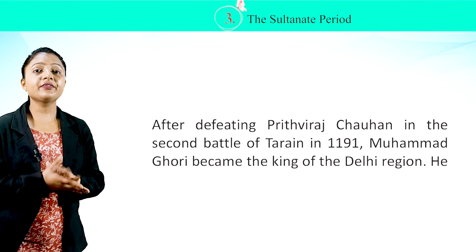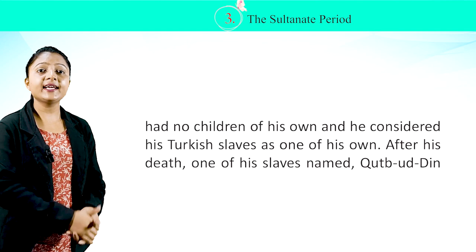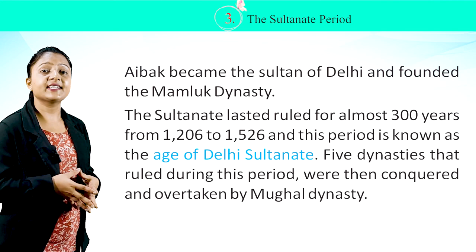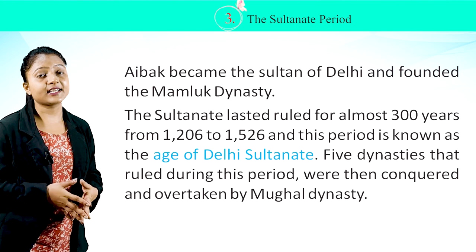After defeating Prithviraj Chauhan in the Second Battle of Tarain in 1191, Muhammad Ghori became the king of the Delhi region. He had no children of his own and considered his Turkish slaves as his own. After his death, one of his slaves named Qutubuddin Aibak became the Sultan of Delhi and founded the Mamluk dynasty. The Sultanate ruled for almost 300 years, from 1206 to 1526, and this period is known as the age of the Delhi Sultanate.